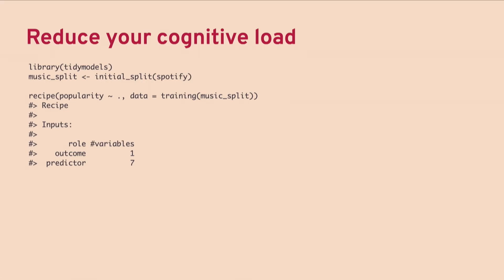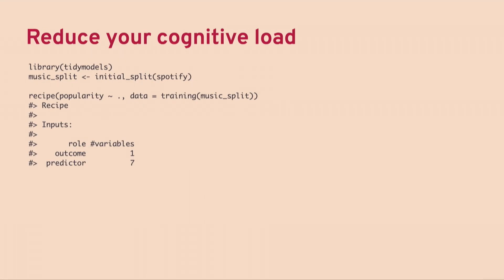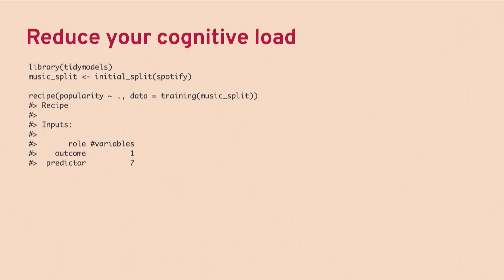In the first line we load the TidyModels package, which loads core TidyModels packages plus some Tidyverse packages. When we start modeling, we typically do an initial split of our data into testing and training sets. That second line takes our Spotify data frame and converts it to an object that has all the indicators for which rows go in training versus testing. You can then access the training set by calling the training() function on the split object.